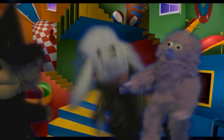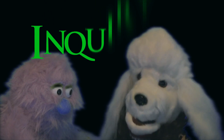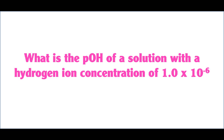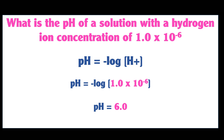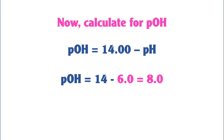Inquiry number five: what is the pH of a solution with a hydrogen ion concentration of 1 times 10 to the negative 6? First, figure out the pH of the solution. pH equals the negative log of the hydrogen ion concentration, which is the negative log of 1 times 10 to the negative 6, and the pH is 6. Now let's calculate the pOH. pOH equals 14 minus the pH, so pOH equals 14 minus 6 equals 8.